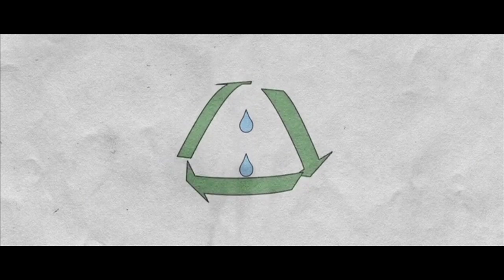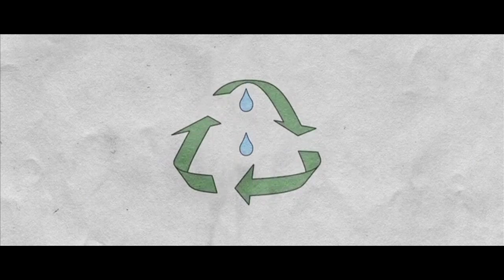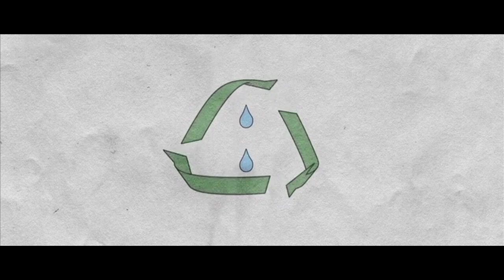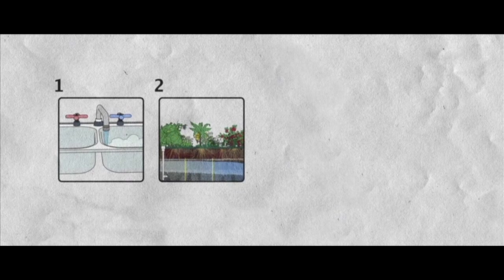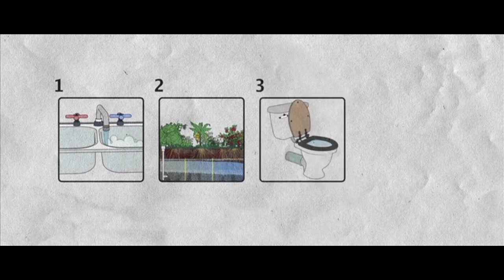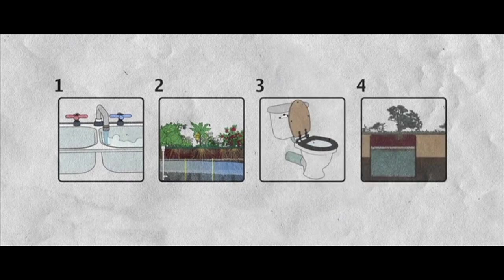In short, earthships make very efficient use of the captured water by using it four times. First, you use it to wash. Then, to water your indoor garden. Then, to flush the toilet. Then, to water your landscaped garden.